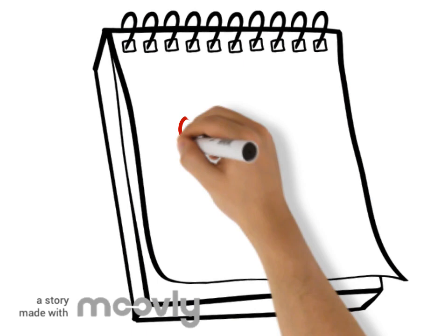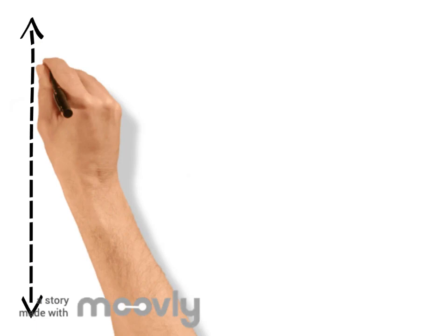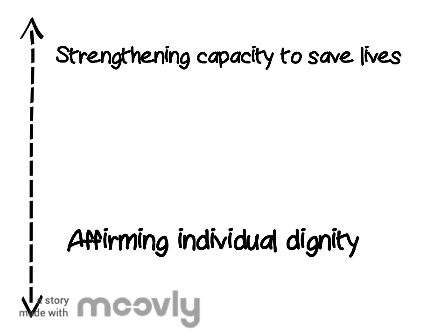Concept two: accountability. Accountability is about strengthening the capacity of aid workers to save lives and alleviate suffering in a manner that affirms individual dignity. Any discussion of accountability must begin and end with the following question.